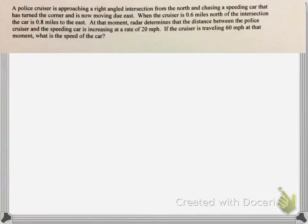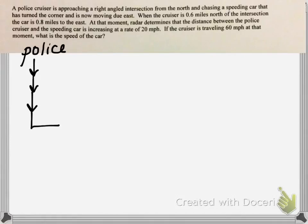We have a police cruiser approaching a right-angled intersection from the north. Let's start by generating a picture. We have this policeman approaching an intersection from the north, so the policeman is traveling south. He's chasing a speeding car that has turned the corner and is now moving due east — that's the direction of the car the policeman is chasing.